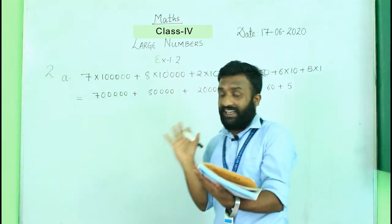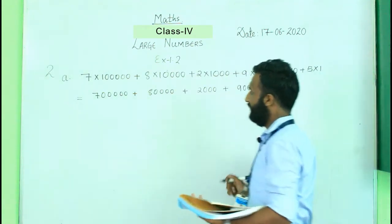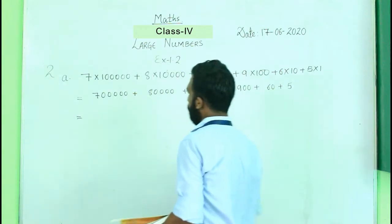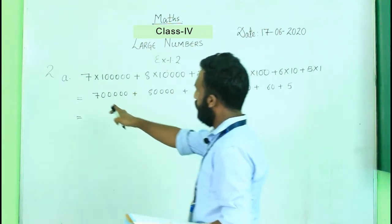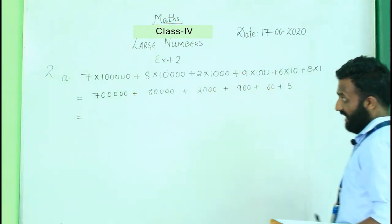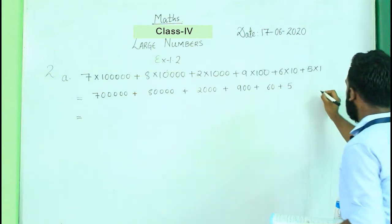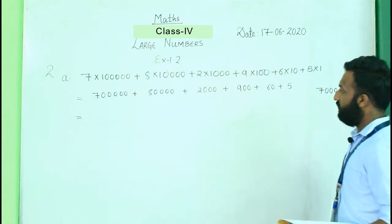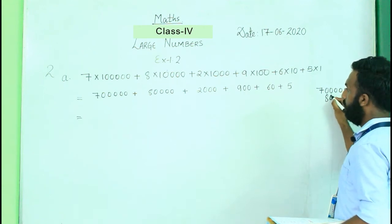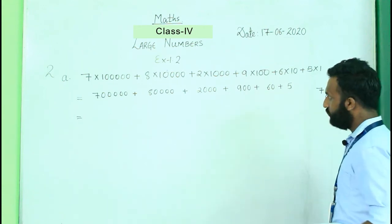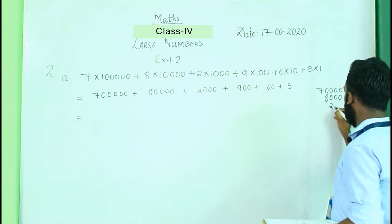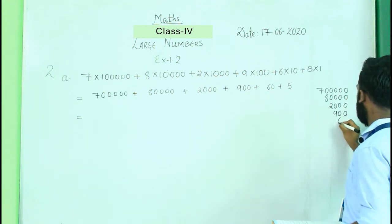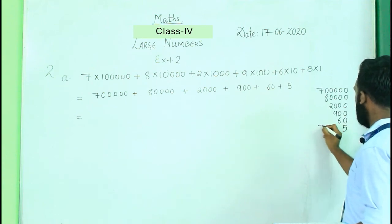After multiplying, we get: 7 lakhs, plus 80,000, plus 2,000, plus 900, plus 60, plus 5. Now we add all of these together to get the standard or short form. Let me do this step by step: we have 7,00,000 + 80,000 + 2,000 + 900 + 60 + 5.